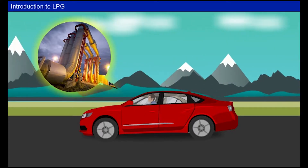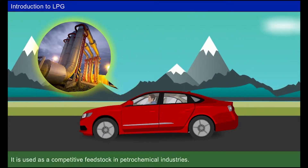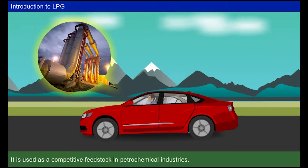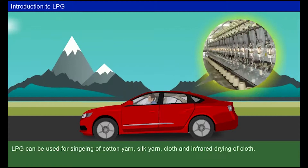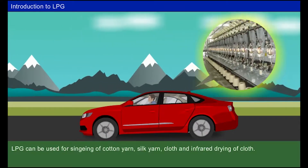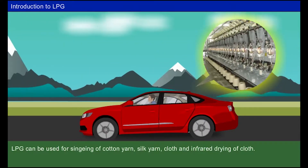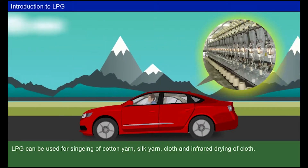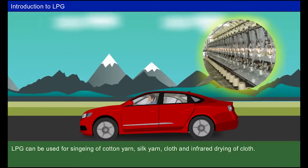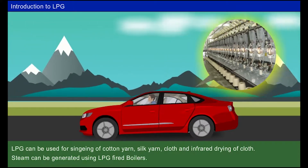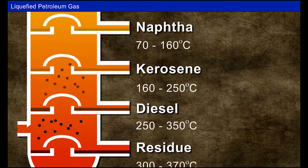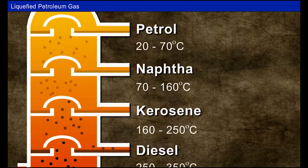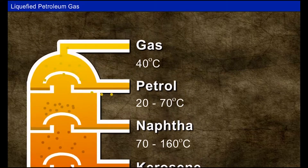LPG has a number of uses. It is used as a competitive feedstock in petrochemical industries. It is mainly used as domestic and industrial fuel. LPG can be used for singeing, that is, lightly burning of cotton yarn, silk yarn, cloth, and infrared drying of cloth. Steam can be generated using LPG-fired boilers. It is extracted from crude oil and natural gas, and is obtained as a by-product during the fractional distillation of heavy oil or cracking of higher hydrocarbons.